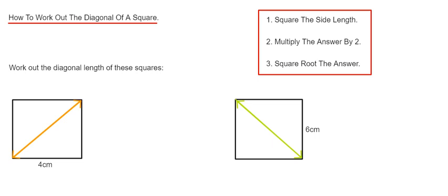The first step is to square the side length. You then multiply this answer by 2, and then finally you square root the last answer. So this is basically just doing Pythagoras. Let's have a look at our first example.